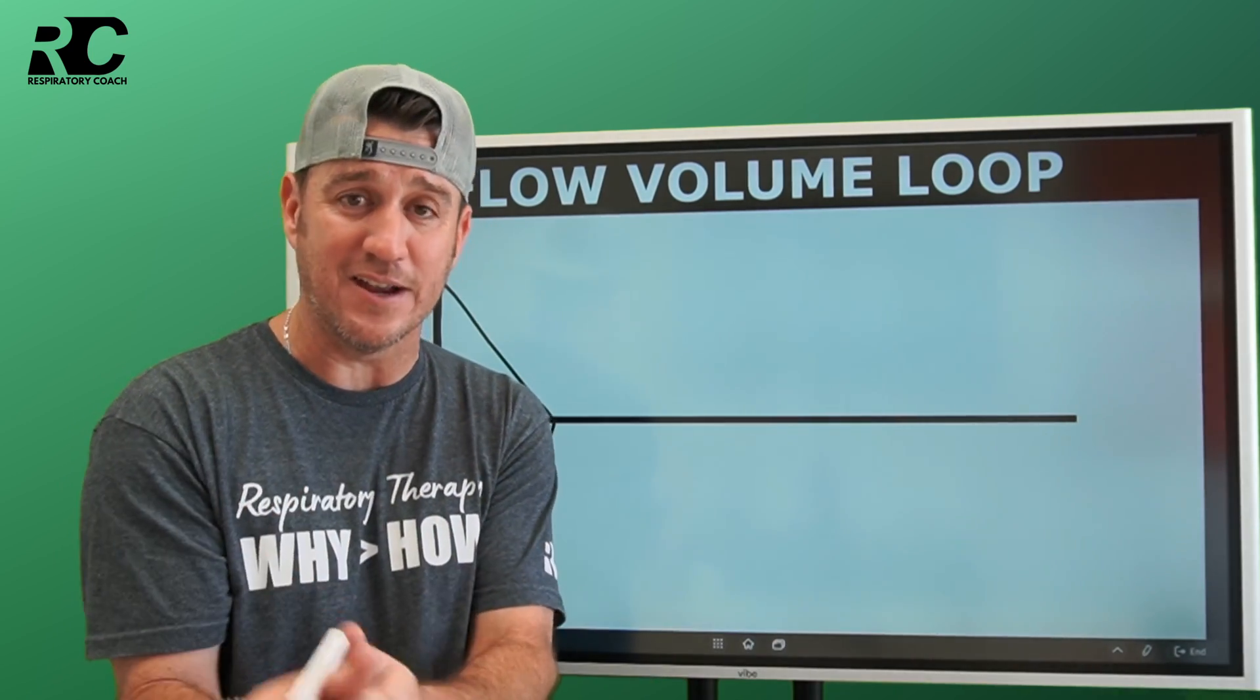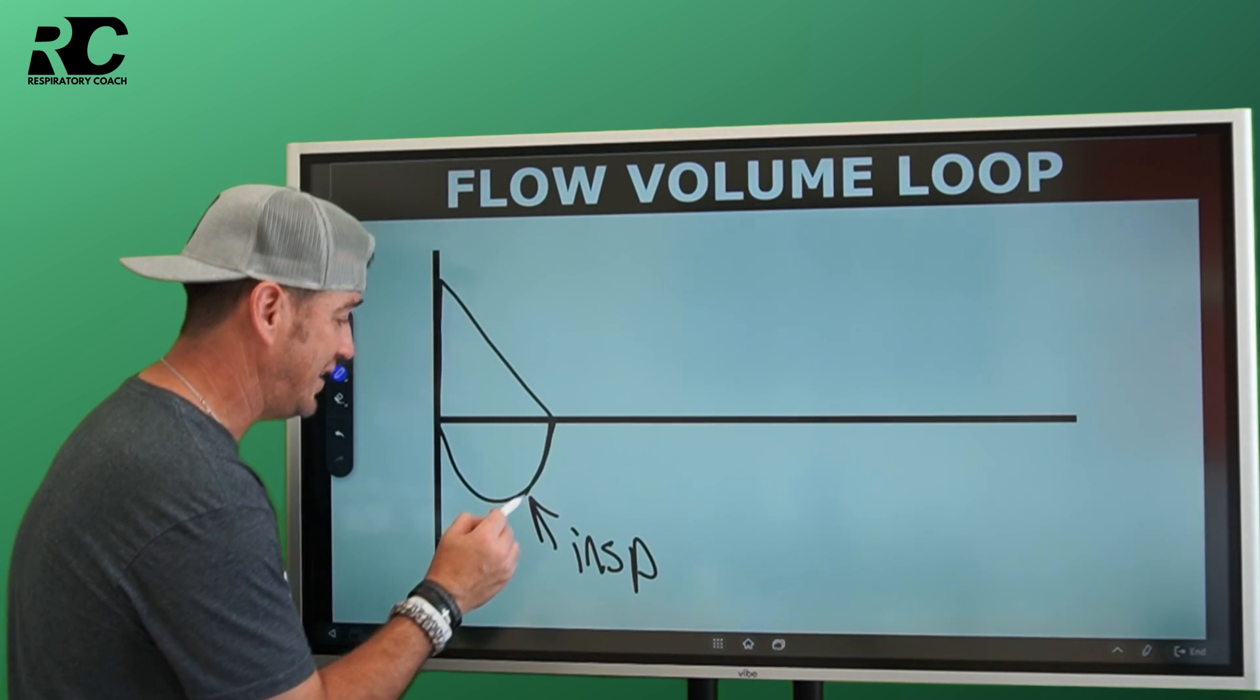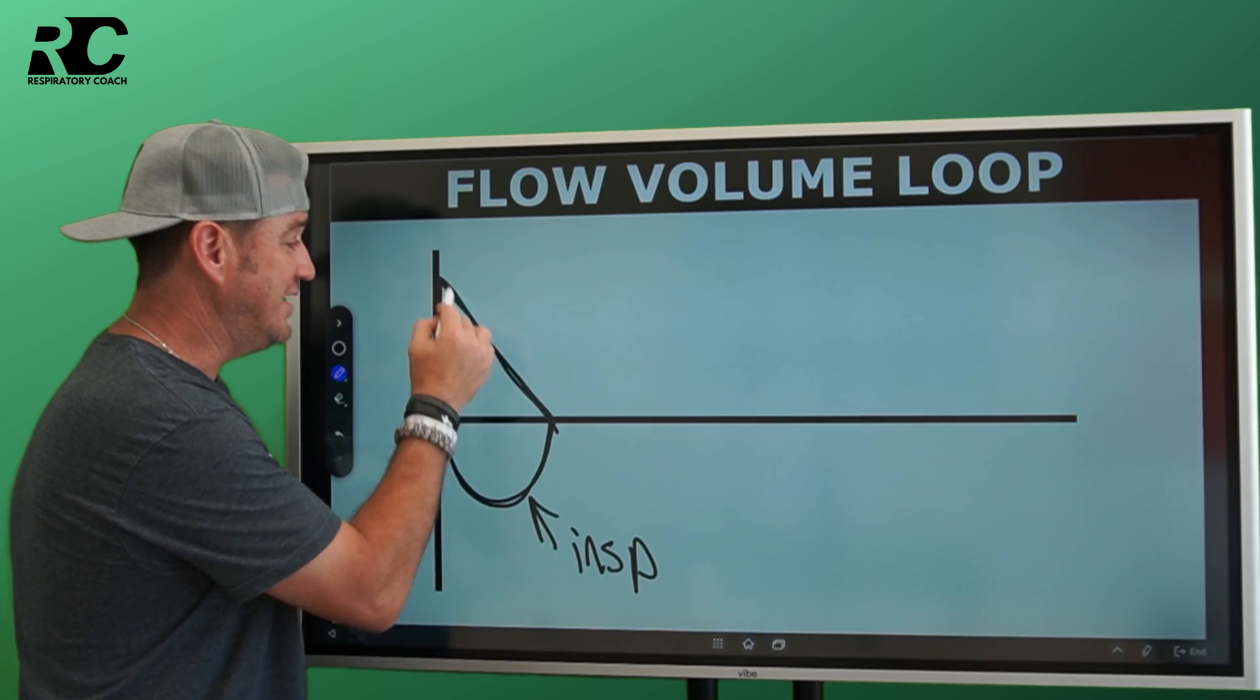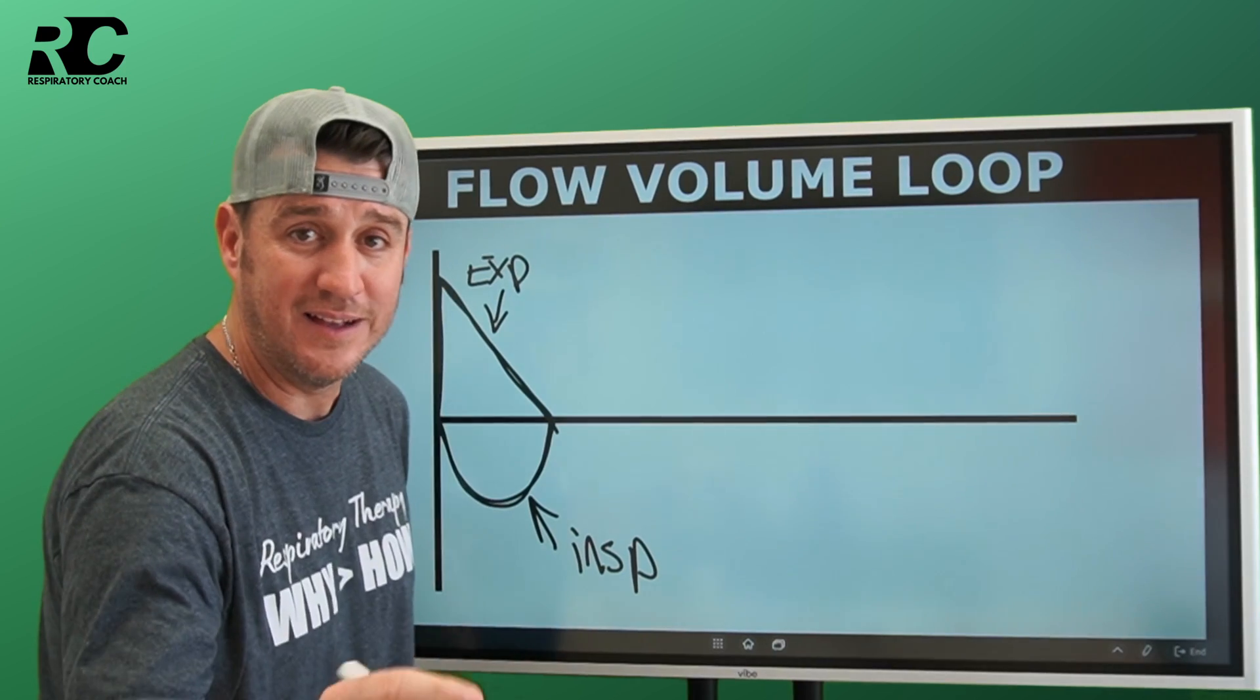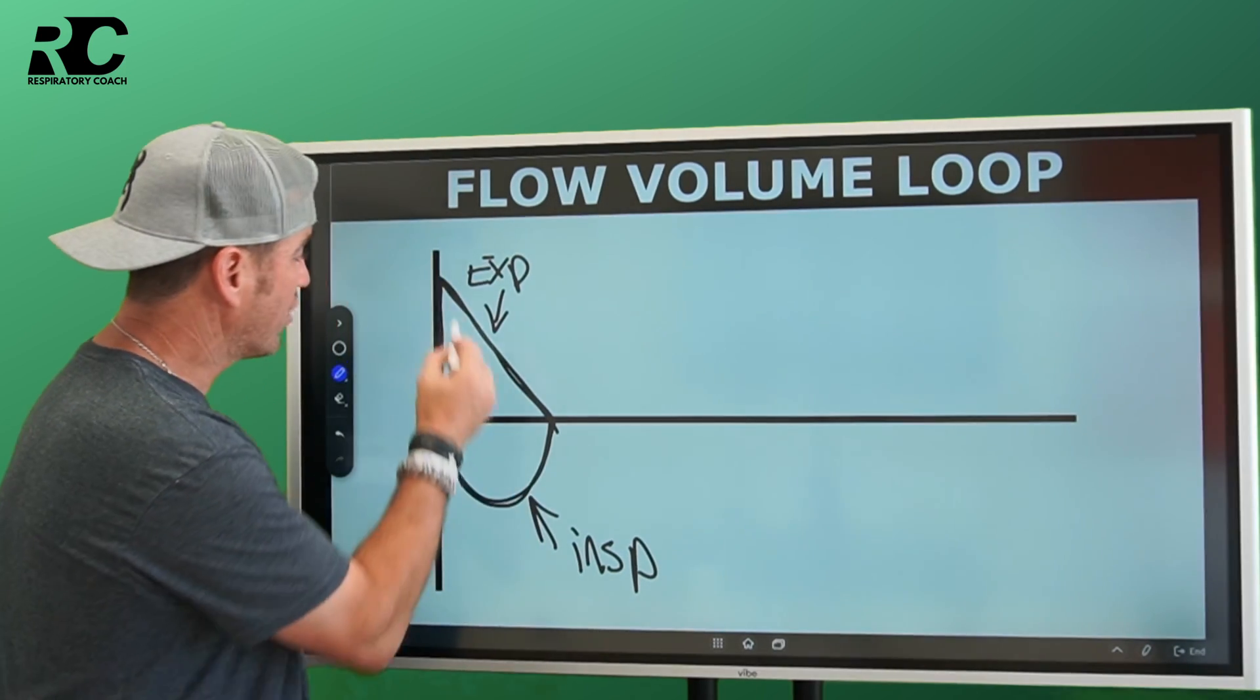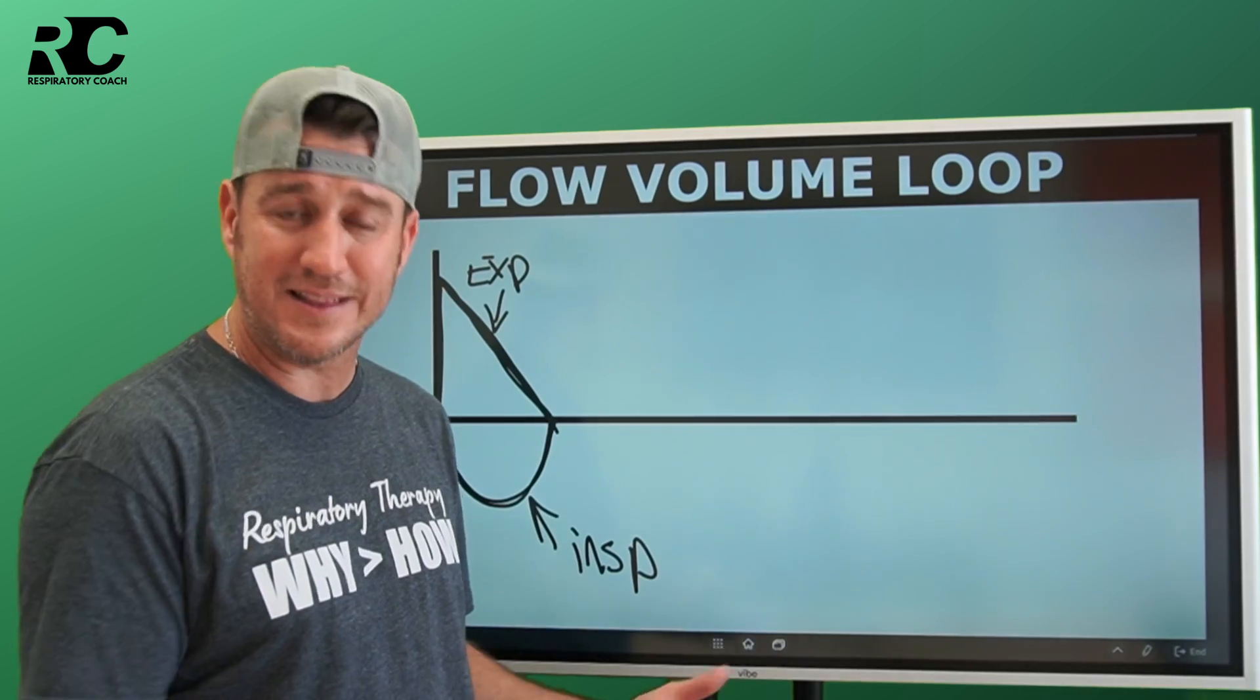That's key here. When we look at this, this bottom part here is inspiration. The patient takes a big, deep breath in, and then blasts it out all the way out to zero. This right here is your expiratory phase. Doesn't it make sense if somebody is obstructed to expiratory flows that we would see something abnormal on this side of the flow-volume loop? And the answer to that question is yeah, Joe, 100% that makes sense.